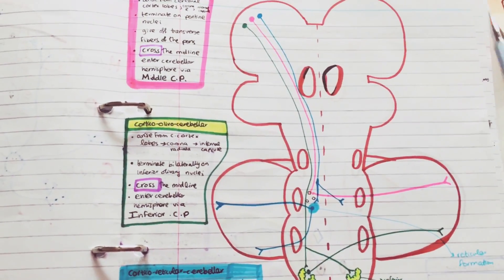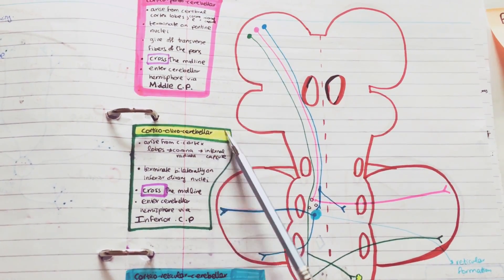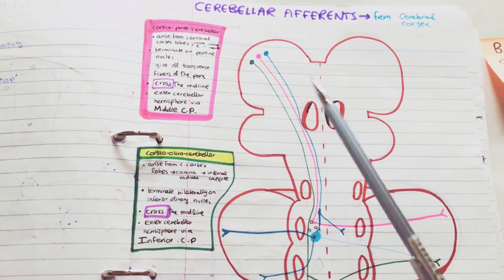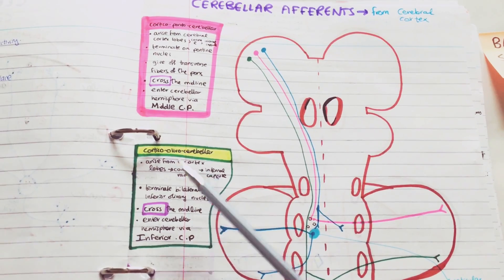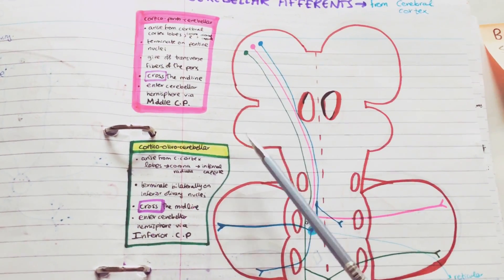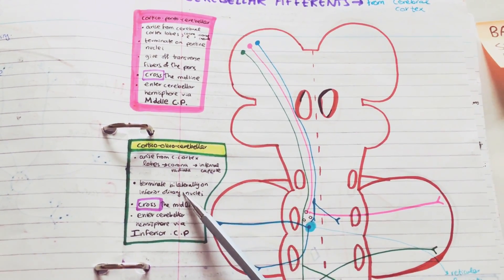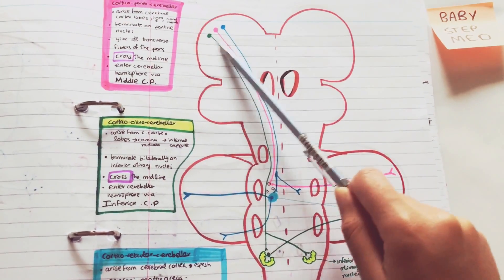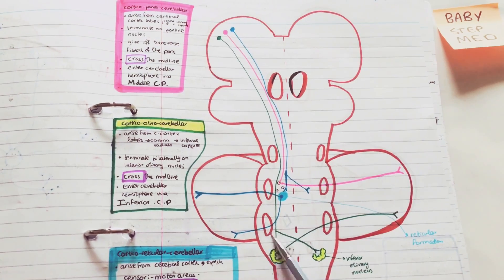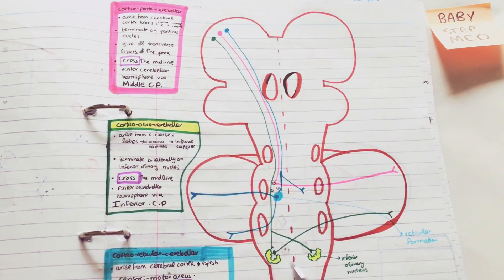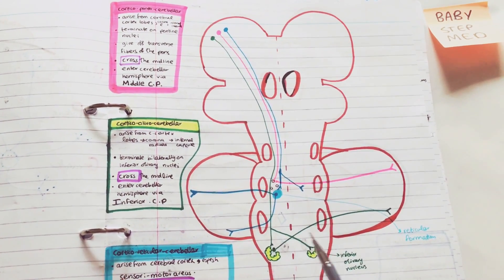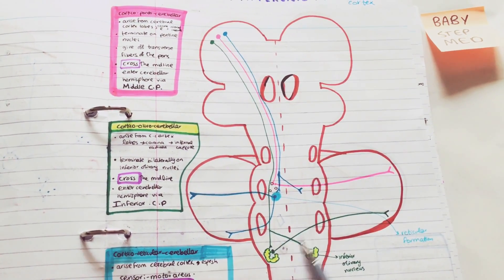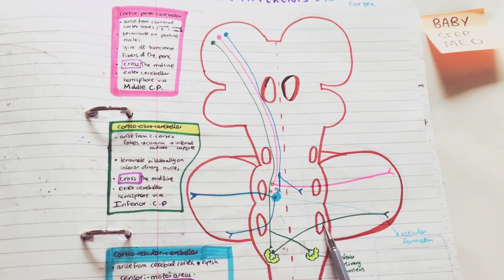Then we have the cortico-olivary-cerebellar tracts, which are the green ones. They also arise in the cerebral cortex, go through the corona radiata and internal capsule, and then terminate bilaterally on the inferior olivary nuclei. From there they cross the midline and enter the cerebellum via the inferior cerebellar peduncle.